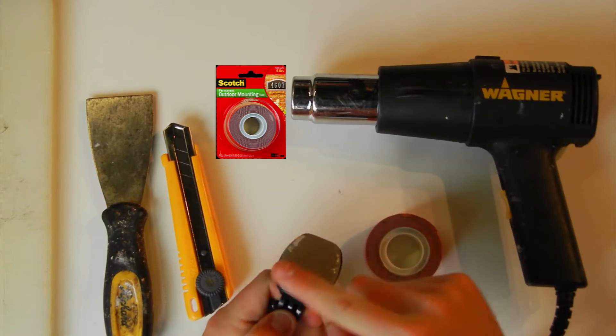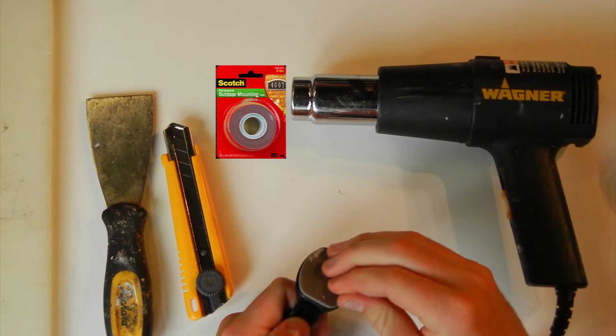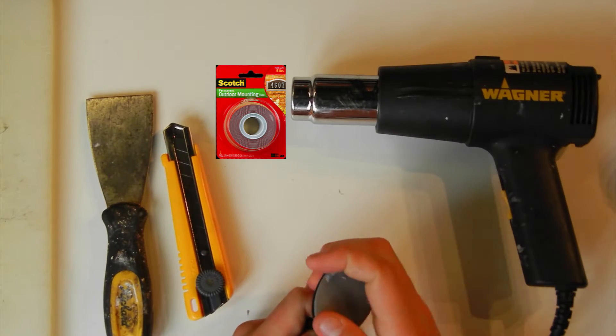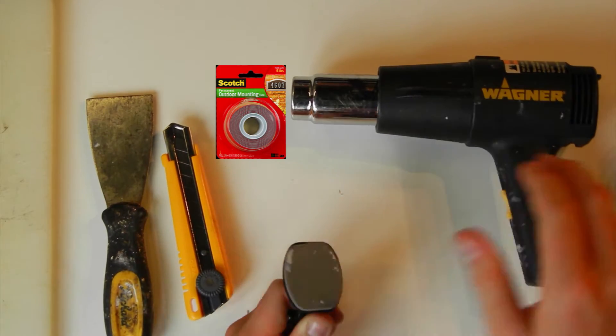So the first thing we're going to do is heat the adhesive up a little bit. As this adhesive gets hot, the glue becomes a little bit softer, and at that point, it'll be easier to scrape off. So let's get started.